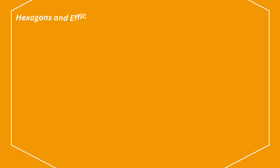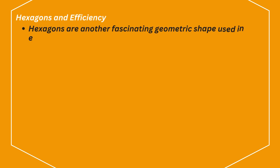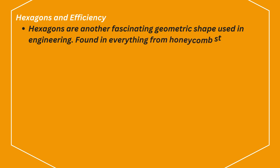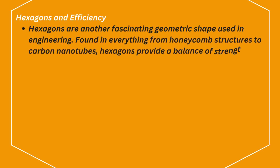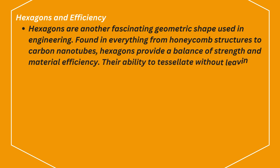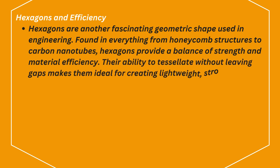Hexagons and efficiency. Hexagons are another fascinating geometric shape used in engineering. Found in everything from honeycomb structures to carbon nanotubes, hexagons provide a balance of strength and material efficiency. Their ability to tessellate without leaving gaps makes them ideal for creating lightweight, strong structures.